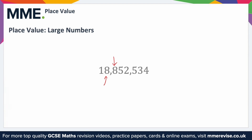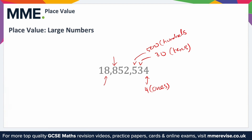Normally with this we work from right to left. Starting from the right, the 4 is in the ones column so it just represents 4. The 3 represents 30 because it's in the tens column, the 5 represents 500 because it's in the hundreds column, and the 2 represents 2,000 because it's in the thousands column.